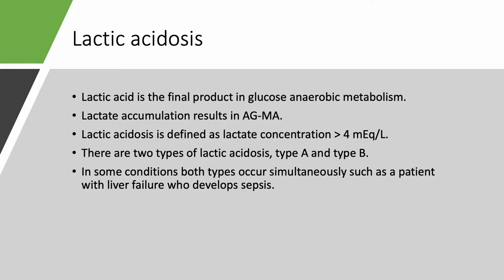Lactic acid is the final product in glucose anaerobic metabolism. With aerobic metabolism, you get pyruvate which goes into the Krebs cycle. Lactate accumulation results in anion gap metabolic acidosis — the gap is from lactate. Lactic acidosis is defined as lactate over 4 milliequivalents or 4 millimole per liter. We have two types: type A and type B. In some conditions you can have both — for example, someone with sepsis (type A) who also has liver failure (type B), resulting in more lactic acidosis.